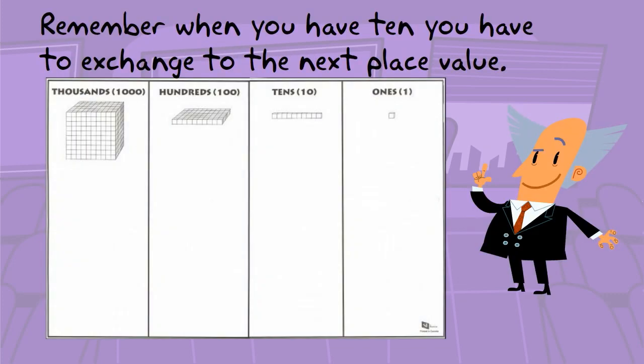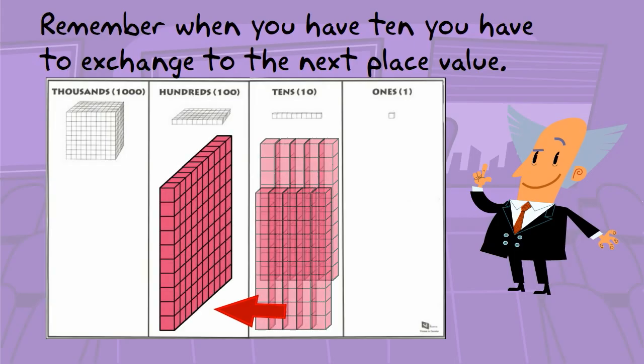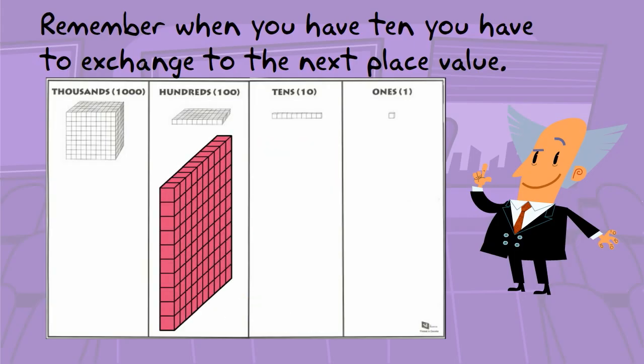Remember that when you have 10 or more of any number in a single place value, you have to exchange it to the next largest place value. For instance, if we had 10 tens, it would equal 100.